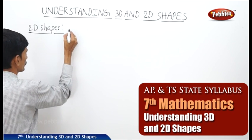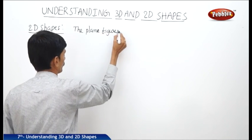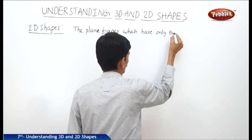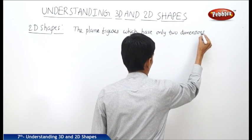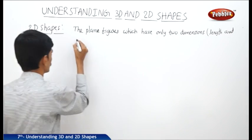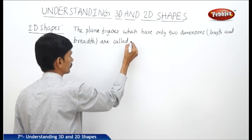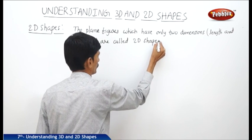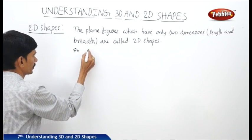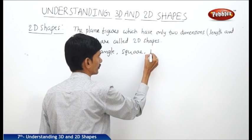The plane figures which have only two dimensions — length and breadth — are called 2D shapes. The examples for 2D shapes are rectangle, square, and rhombus.